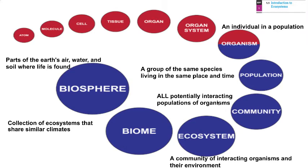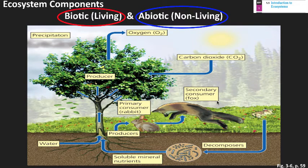Building out larger than that, we get to ecosystems — a community of interacting organisms along with their environments. Now we're talking about the abiotic components, so it's really a combination of abiotic components in the environment and all the interacting communities, which are the biotic components. Biotic means living components and abiotic means non-living.